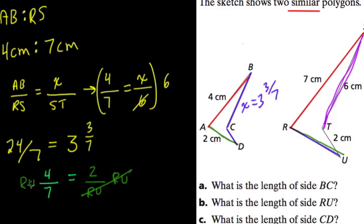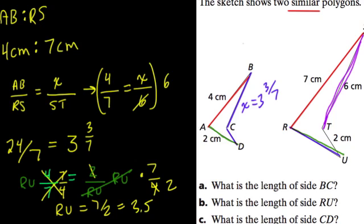Now I have RU times 4 sevenths equals 2. So I'll multiply both sides by 7 over 4, the reciprocal. This allows me to cancel out and make things a little bit easier. Times 7 over 4, because these cancel out. 2 over 4 is a half. And RU is 7 over 2, which is equal to 3.5. And we can put that right on here, 3.5. That makes sense. It's a little bit longer than AD.